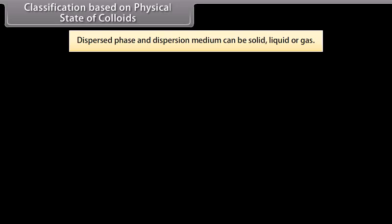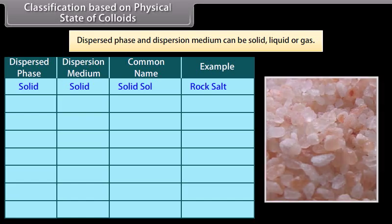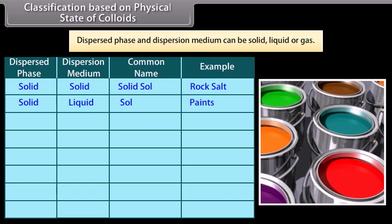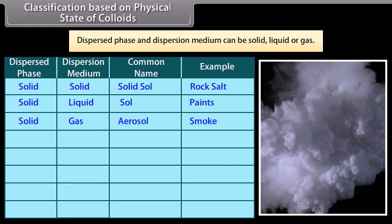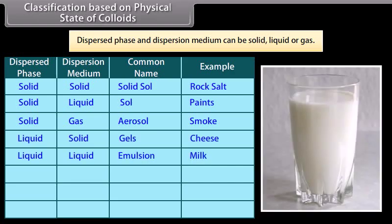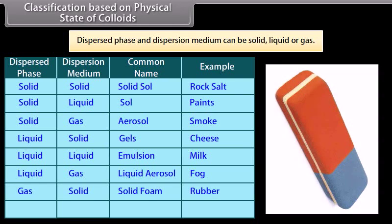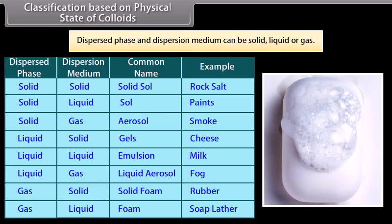The dispersed phase and dispersion medium can each be solid, liquid, or gas, giving eight types of colloidal systems. Examples include: rock salt (solid sol), paint (sol), smoke (aerosol), cheese (gel), milk (emulsion), fog (liquid aerosol), rubber (solid foam), and soap lather (foam).